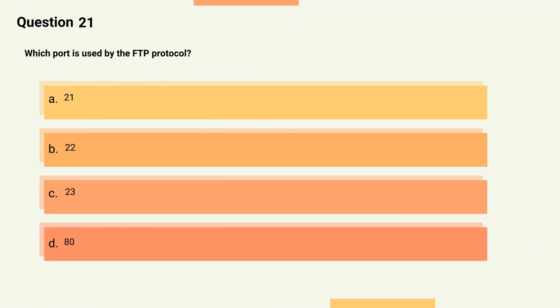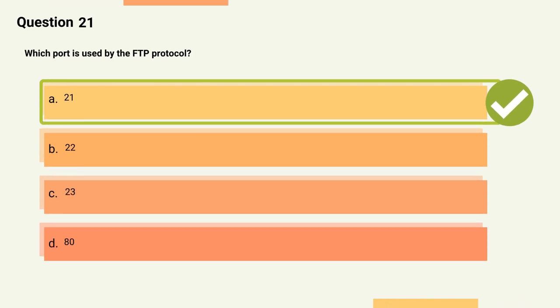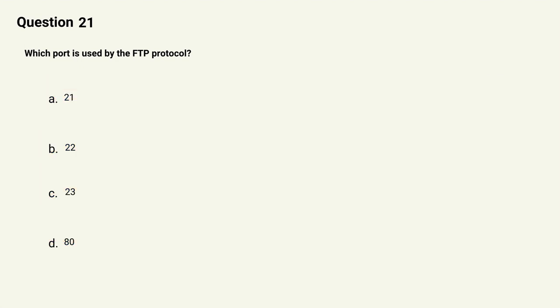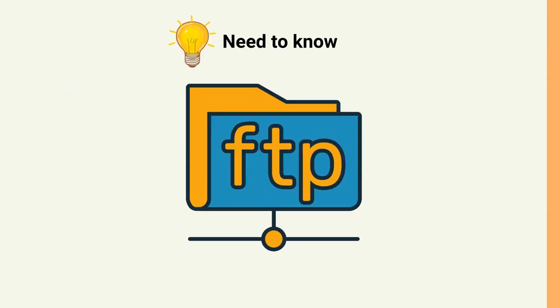Question 21: Which port is used by the FTP protocol? Options: A) 21, B) 22, C) 23, D) 80. The correct answer is Option A, 21. Explanation: Port 21 is the default port used by the FTP protocol for file transfers.